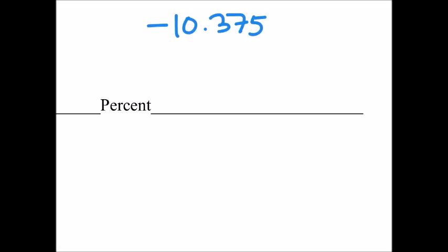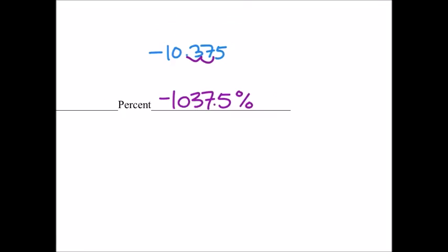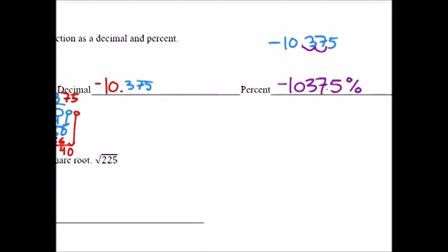To change this into a percent, we're just going to move the decimal over twice. And we'll have negative one thousand thirty-seven point five percent. There we go.